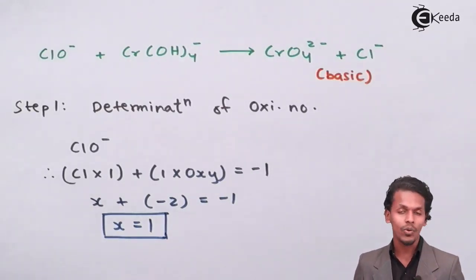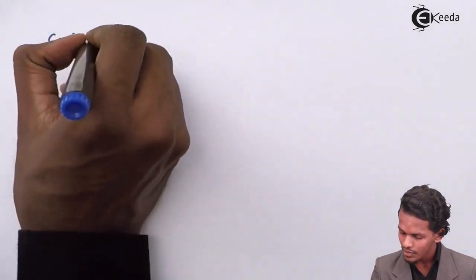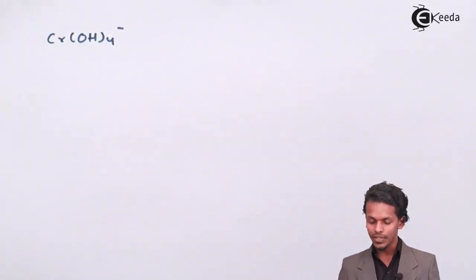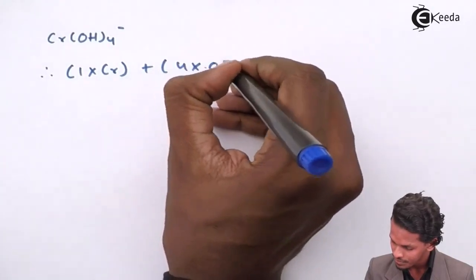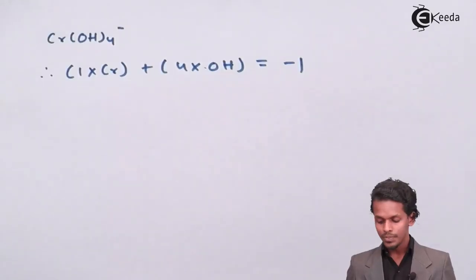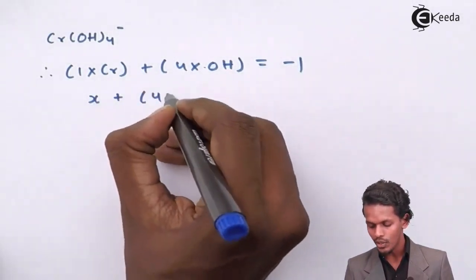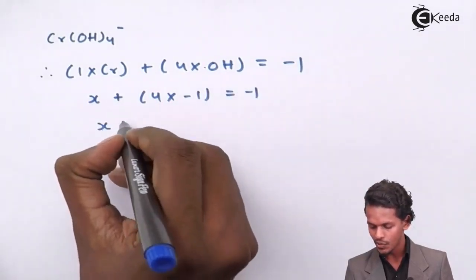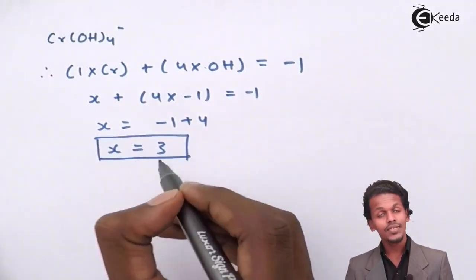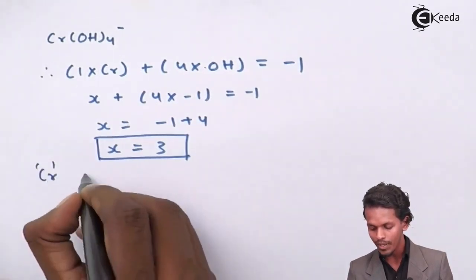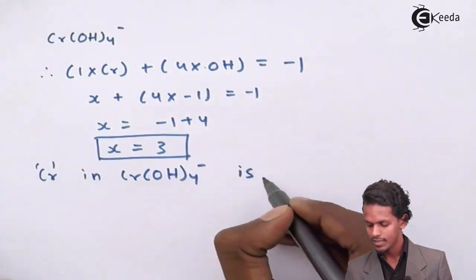Now for the second reactant, Cr(OH)₄⁻. Its overall charge is −1. We write: 1×Cr + 4×(OH) = −1. Taking the oxidation number of chromium as X: X + 4×(−1) = −1, so X = −1 + 4, giving X = +3.